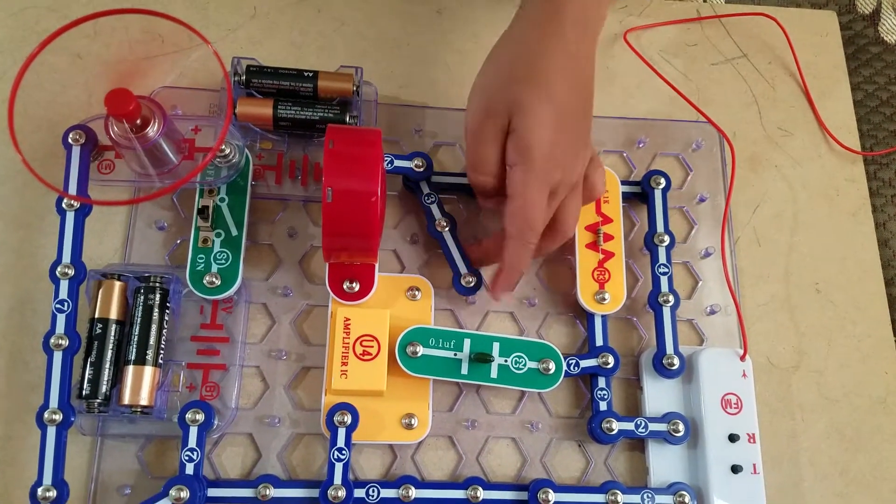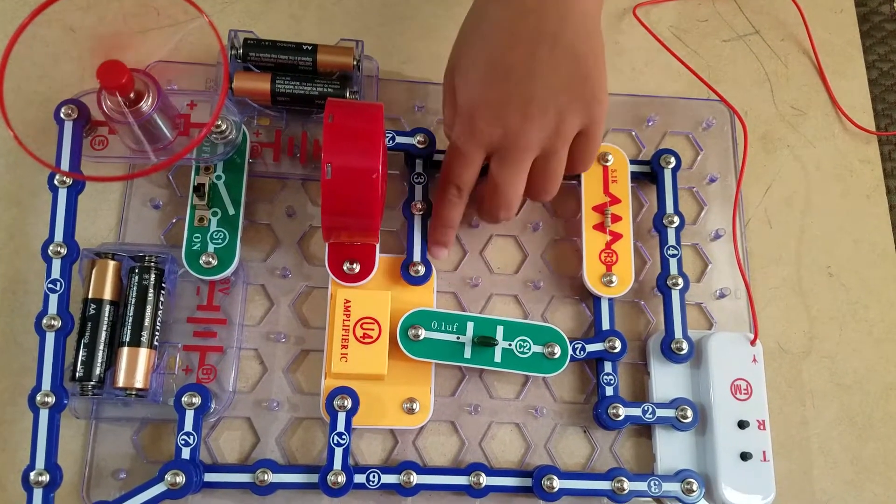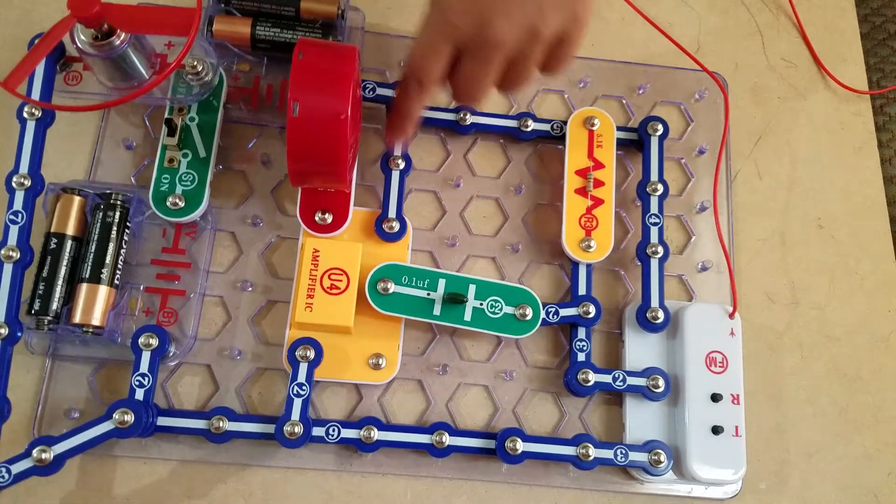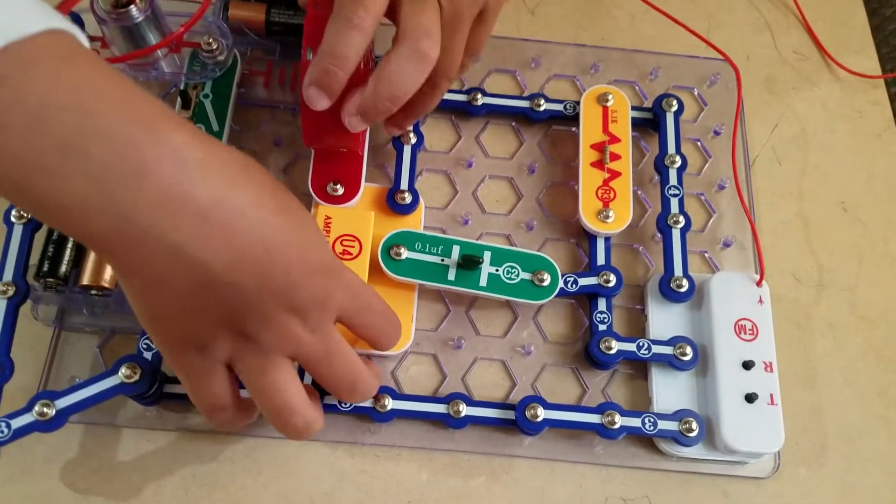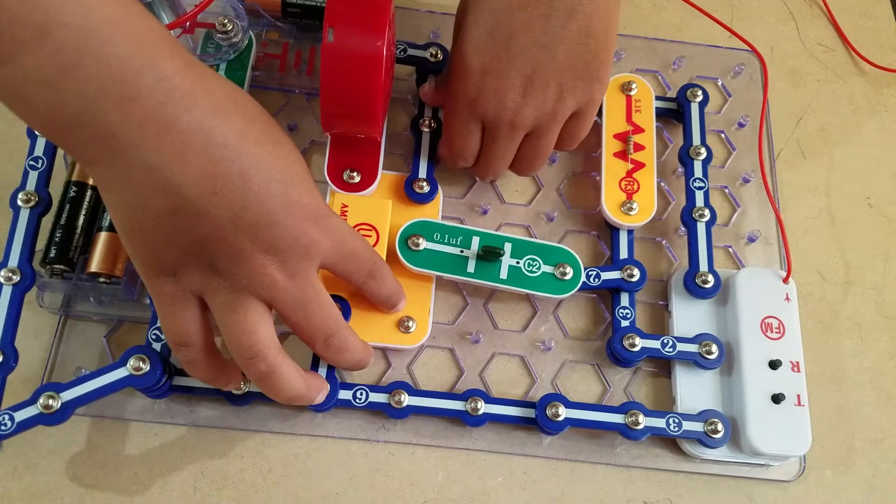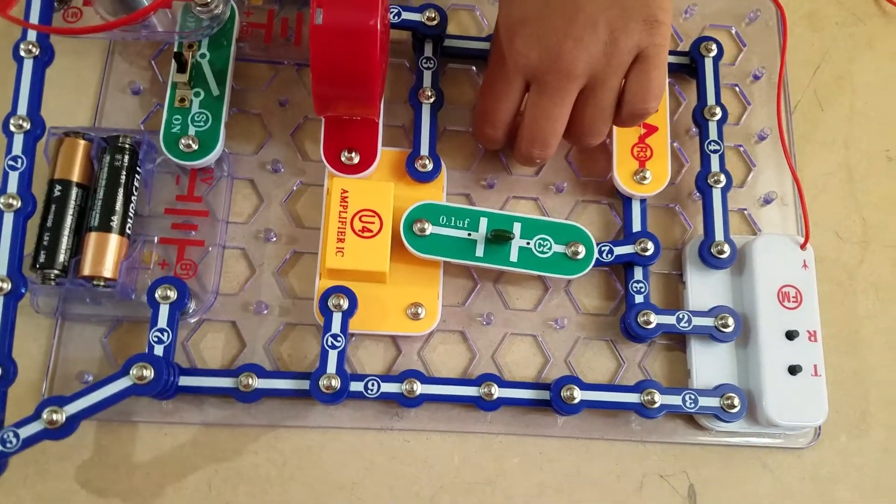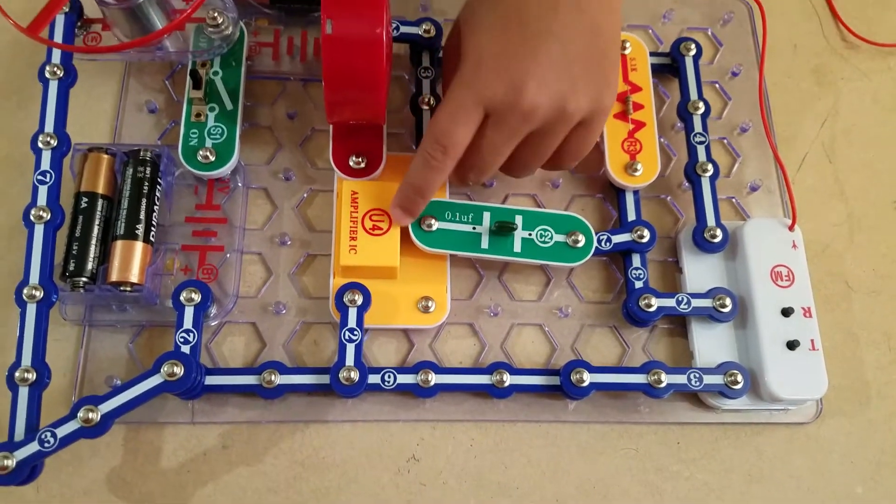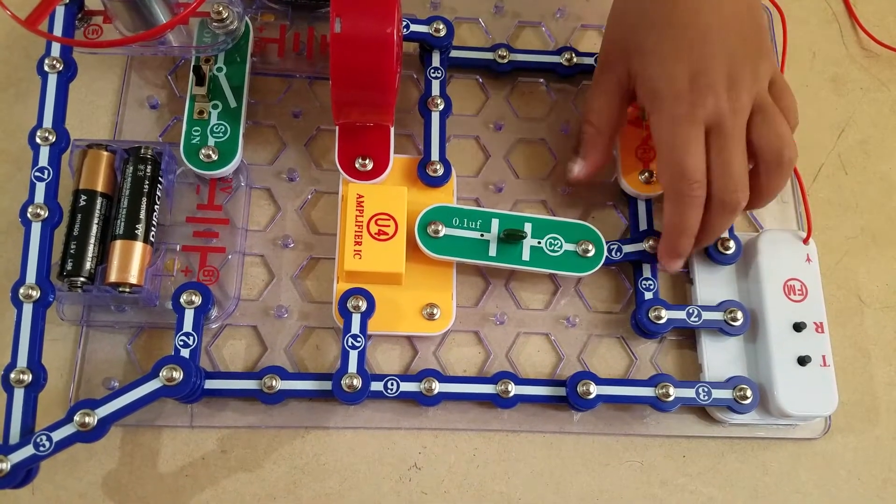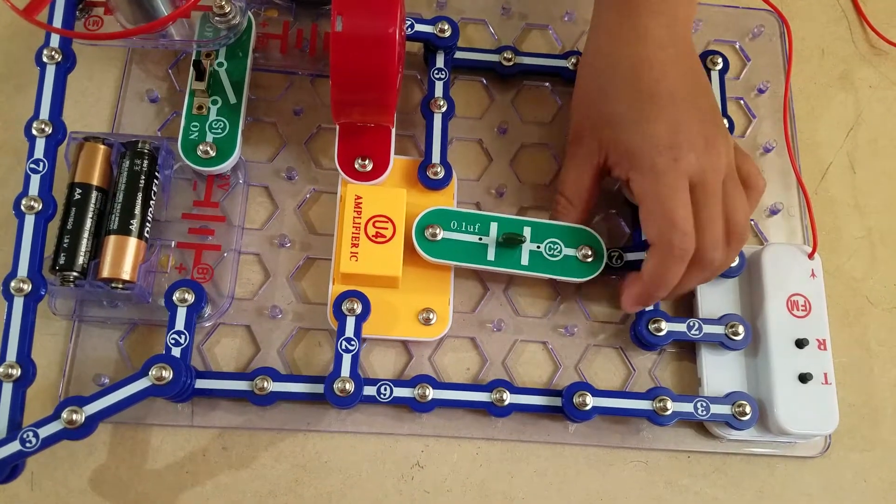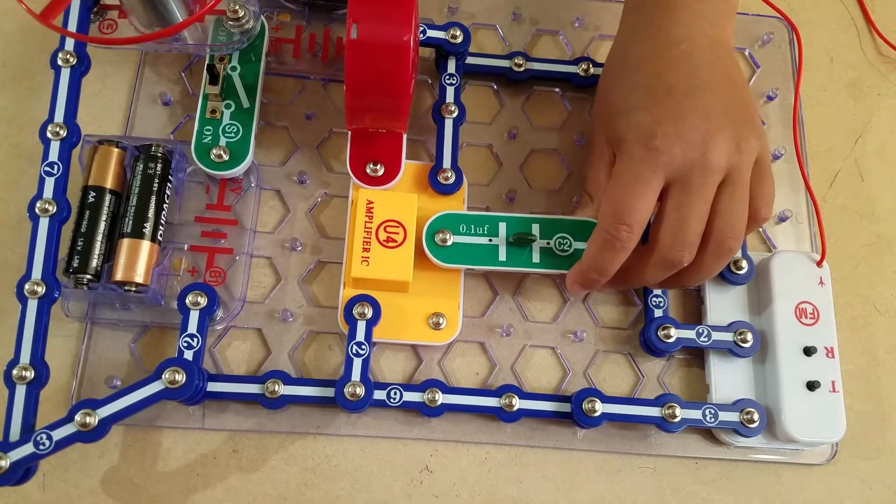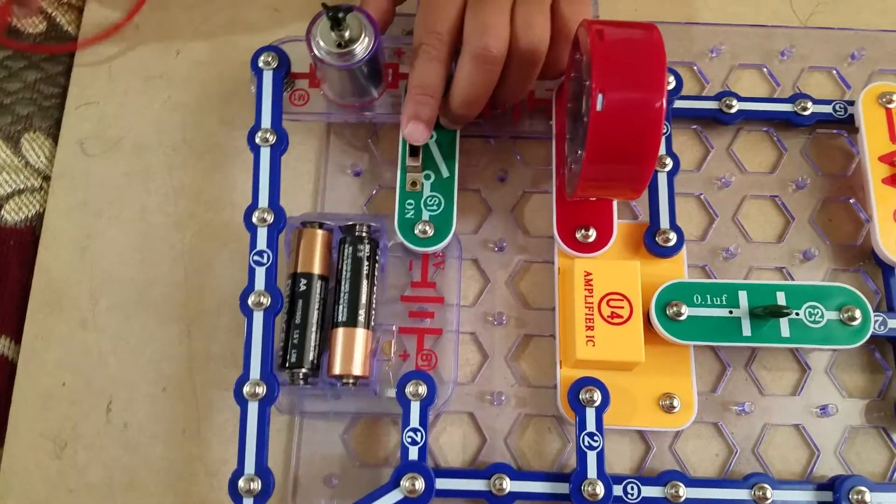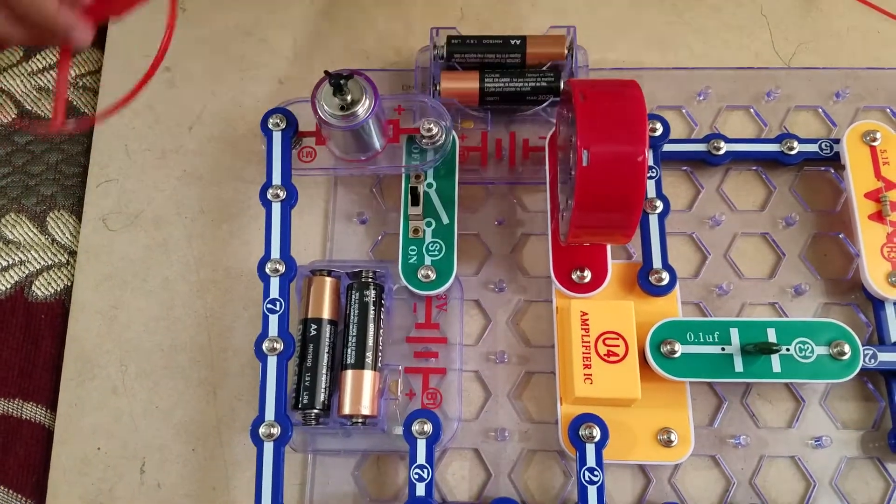And see this? Now you have this. This is the Snap Circuit. Now let's turn this off. And this is Snap Circuit. This is amplifier. The U4 is amplifier, and this one is C2 on and off switch. What is on and off switch? See this one? This is on and off switch.